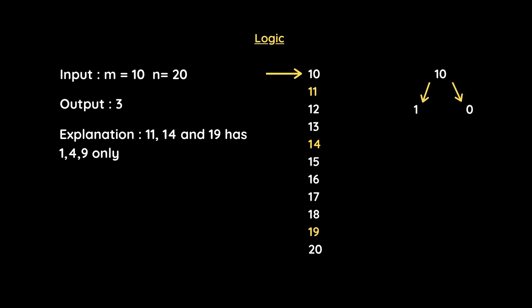The approach is: use a for loop from m to n to iterate over all numbers. For each number, we check its individual digits. For example, for 10 the digits are 1 and 0 — 0 is invalid so we skip it. For 11 the digits are 1 and 1, so we include it. We repeat this for all numbers.